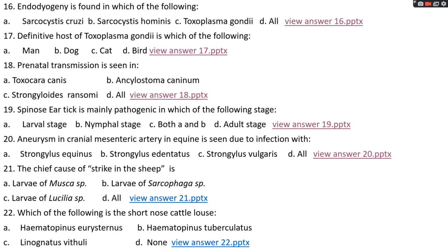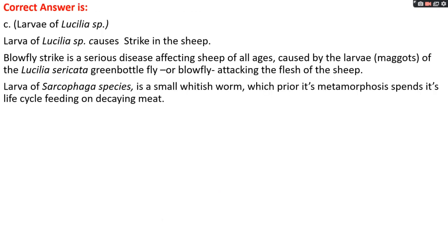Question number twenty-one: the chief cause of strike in sheep is options A, larva of Musca; options B, larva of Sarcophaga; option C, larva of Lucilia; options D, all. The right answer is option C, larva of Lucilia species. Larva of Lucilia species causes blowfly strike in sheep — a serious condition affecting sheep of all ages, caused by the maggots of Lucilia sericata, the green bottle fly or blowfly, mainly affecting the flesh of the sheep. Larva of Sarcophaga species is a small whitish worm that feeds on decaying meat prior to metamorphosis — hence the name Sarcophaga (sarco = dead flesh, phaga = eating).